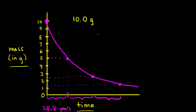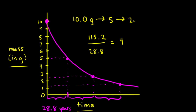Let's say we're asked to find how much of our Strontium-90 remains after 115.2 years. We take 115.2 years and divide by the half-life of 28.8 years, and we find that 115.2 years is really just four half-lives. Starting with 10 grams: one half-life takes us to 5 grams, another to 2.5, and another to 1.25.